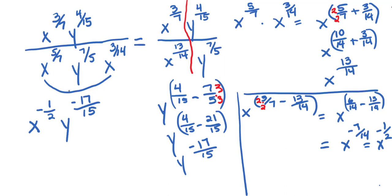So I've finished all the work. I'm not allowed to leave these negative exponents. So both of these are going to shift to the denominator. So I'm going to have X to the positive 1 half Y to the positive 17 15ths.